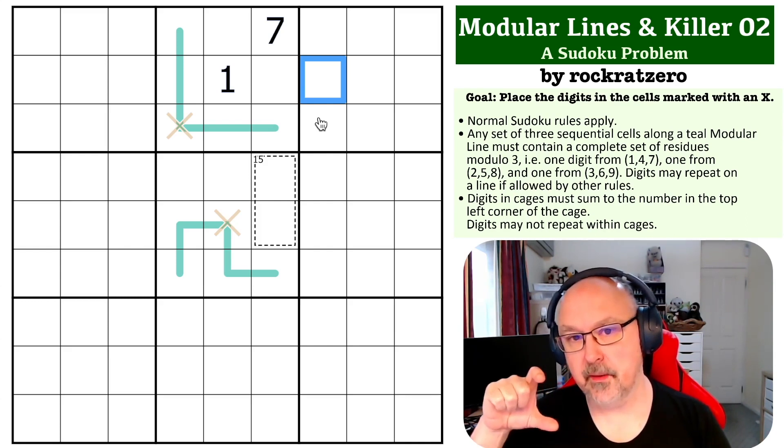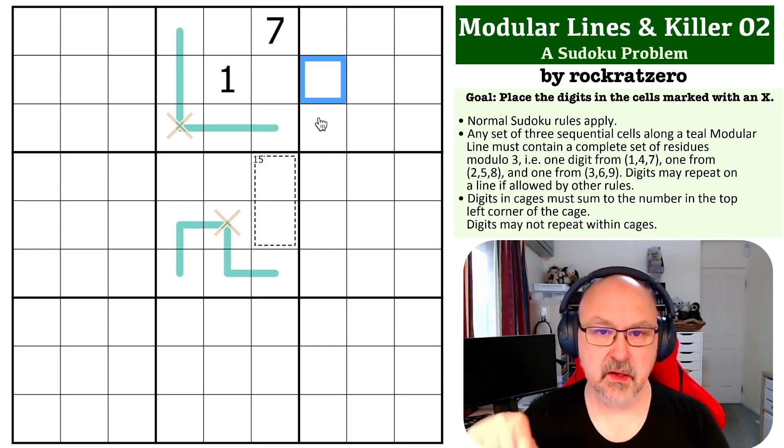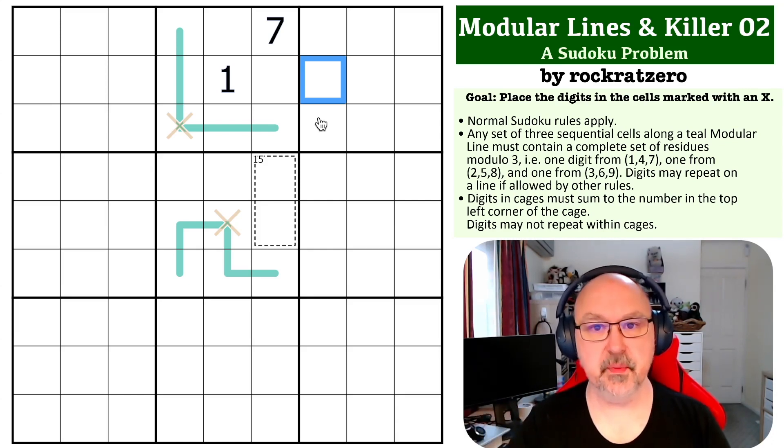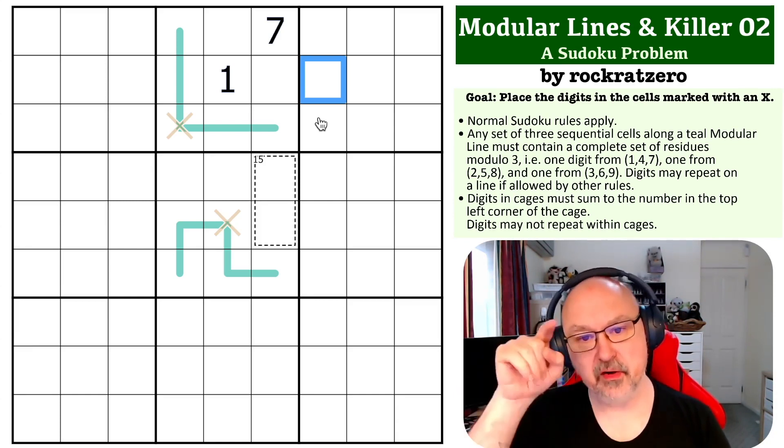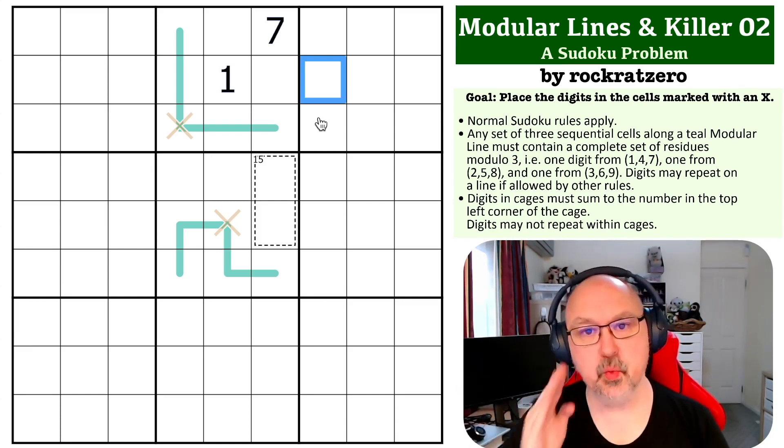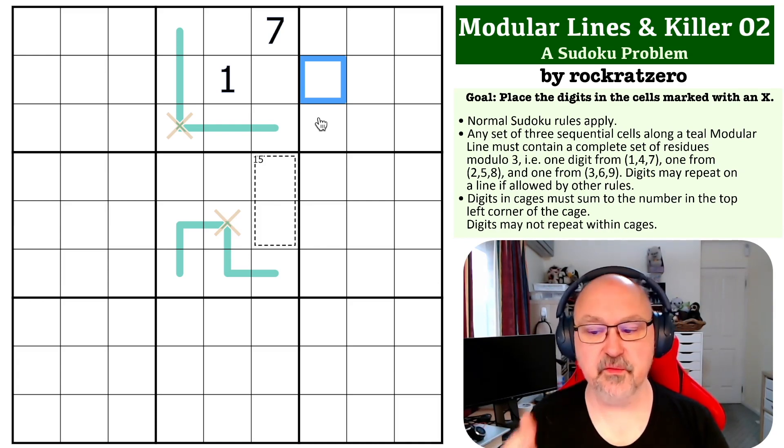If you look at your numeric keypad or the one on the Sudoku pad, basically you're using the vertical bands of lines: 147, 258, 369. And along any three cells, you must use one of each of those digits - one of 147, one of 258, one of 369. Have a look at this problem, see if you can figure it out, and I'll be back in a few seconds to explain it.